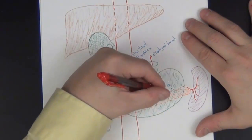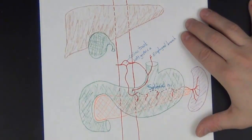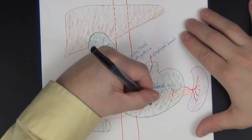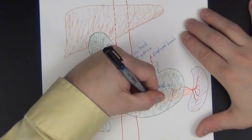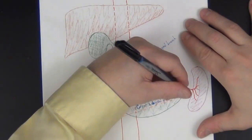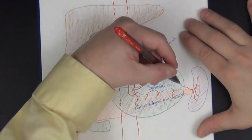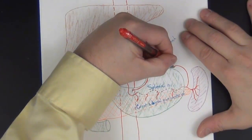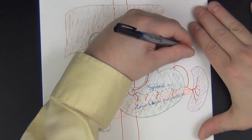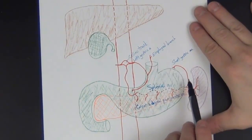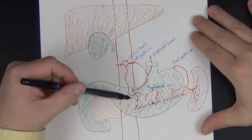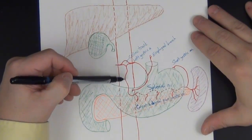The pancreas's body and tail receive vessels from the splenic artery — these are the great and dorsal pancreatic arteries. The splenic artery also sends a small branch up to the fundus of the stomach; those are called the short gastric arteries. These organs are much more tightly pressed together in the abdomen than the schematic suggests, but this shows the branching pattern clearly.